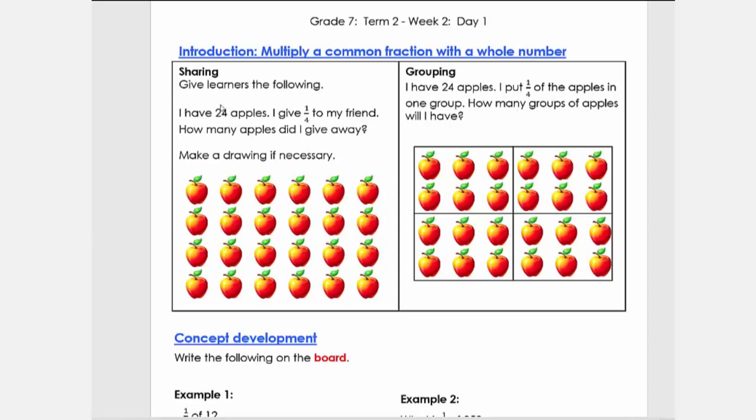I'm going to go back to grouping. I have 24 apples. I put one quarter of the apples in one group. So I need to know what is a quarter of the apples. I need to know a quarter of the apples is 6. How many groups of apples will I have? I will have 4, because at the beginning we said I put a quarter of the apples.